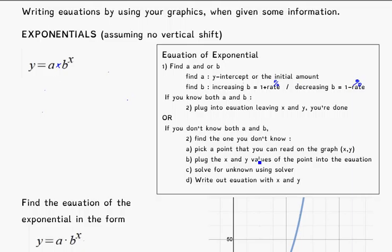And often you get b more from the word problem than you would from the actual graph. So if you know both of them, a and b, you just plug it straight into the equation and you're done. If you only know one, we've got to go through the process of putting in the one we know, using a point, using solver, and then writing out the equation. This is very similar to what you did for the hyperbolas.